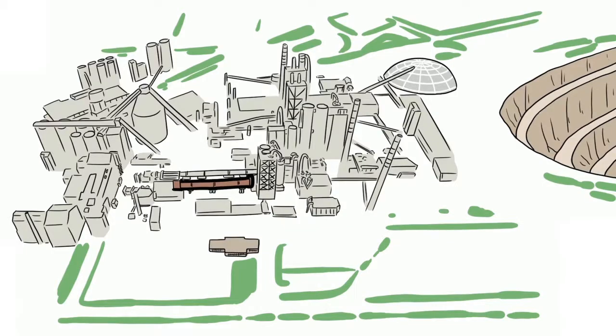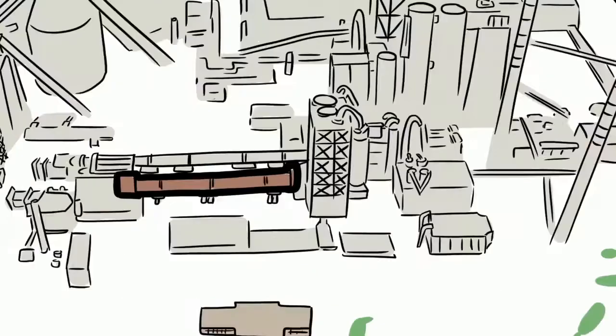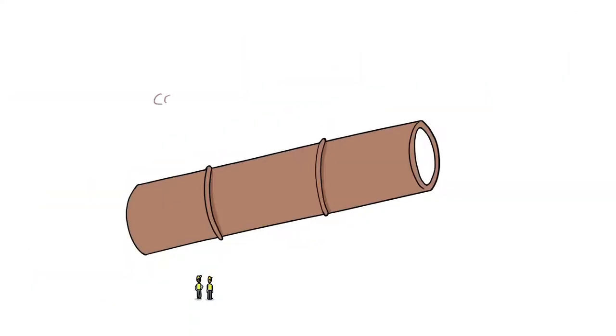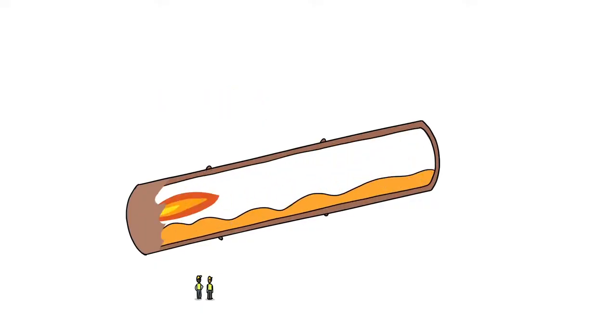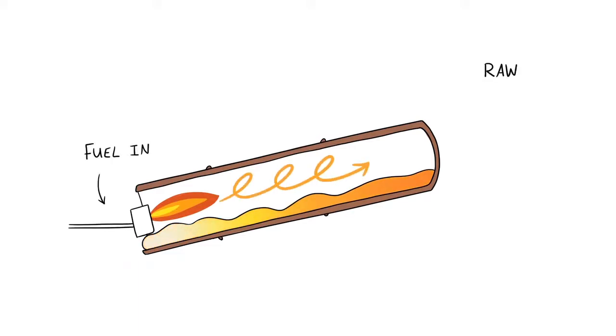The next step involves extreme temperatures, and to get these temperatures we need to burn fuel. In the past, we only used fossil fuels, but now the cement industry is replacing fossil fuels with locally produced alternative fuels made from waste materials, which is good for our business and also good for the environment.